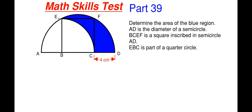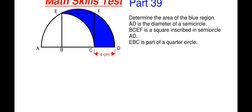We also have E, B, and C as part of a quarter circle, and we are shown that C to D is four centimeters. In order to find the blue area, what we're going to do is expand. This method I'm going to show is just one potential method you could use to solve this — not necessarily the best or the fastest, just one potential approach.